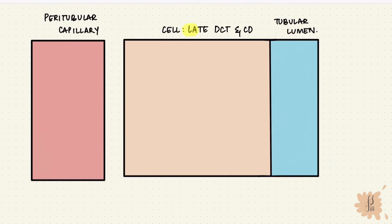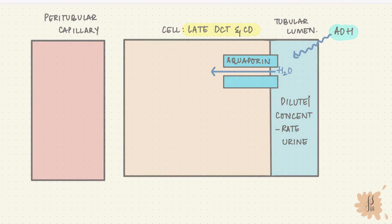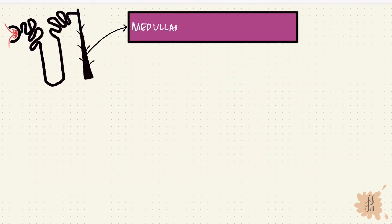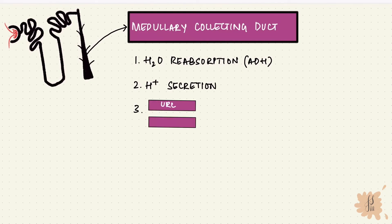The late DCT and collecting duct are virtually impermeable to water without antidiuretic hormone. ADH creates water channels called aquaporins, so they become permeable to water. This area is under the influence of ADH, which can control dilution or concentration of urine. The medullary collecting ducts are the final site of processing. They can reabsorb water under the influence of ADH as well, secrete hydrogen ions against a gradient for acid-base balance, and they have urea transporters so urea can move out of the nephron into the medullary interstitium — important in the countercurrent multiplier to maintain medullary hypertonicity.